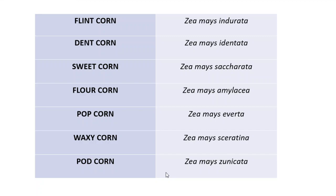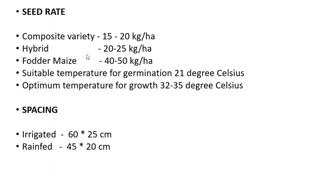Seed rate: for composite variety it is 15 to 20 kg per hectare; for hybrid it is 20 to 25 kg per hectare; for fodder maize it is 40 to 50 kg per hectare. Suitable temperature for germination is 21°C; optimum temperature for growth is 32 to 35°C. Spacing for irrigated maize is 60 × 25 cm, and for rainfed conditions 45 × 20 cm. Water requirement is 500 to 800 mm.